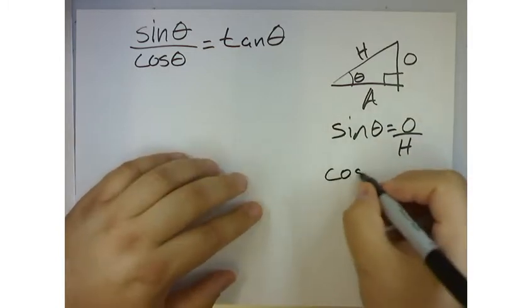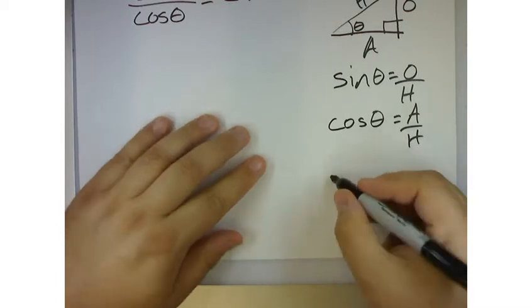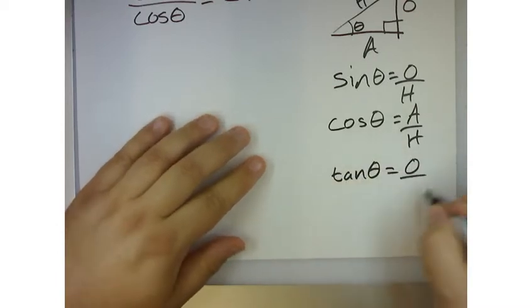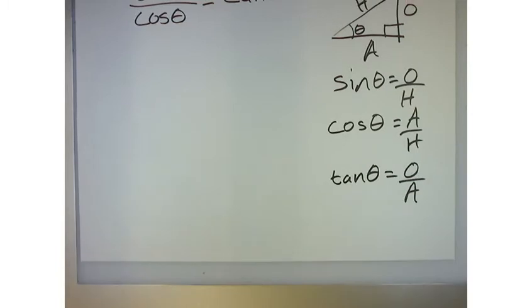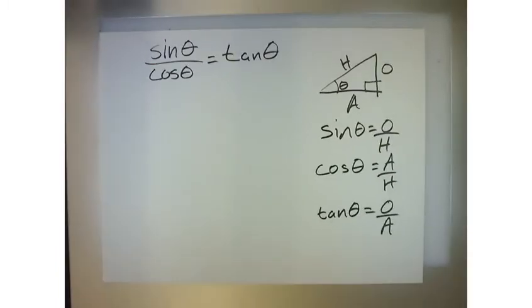Cosine of theta is equal to the adjacent over the hypotenuse. And then again, tangent represents the opposite over the adjacent. We know that for sure, right? We're good with that? Yes. Alright, so if that's the case,